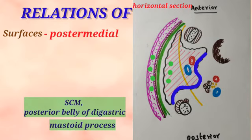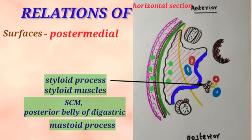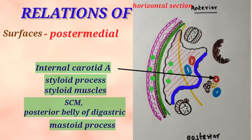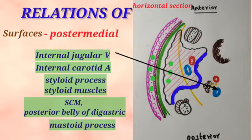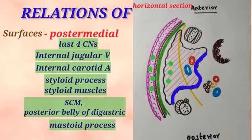Deep to the styloid process, we can also see the internal carotid artery in front and the internal jugular vein behind, with the last four cranial nerves intervening between them. The facial nerve is also related to this surface when it emerges from the stylomastoid foramen. These are the relations of the different parts of the parotid gland.